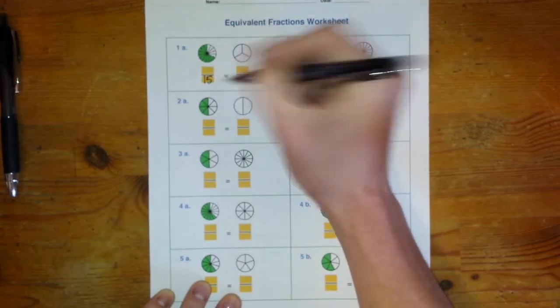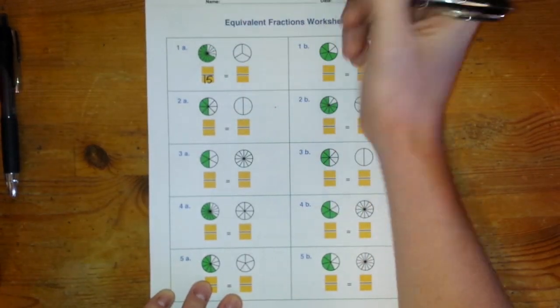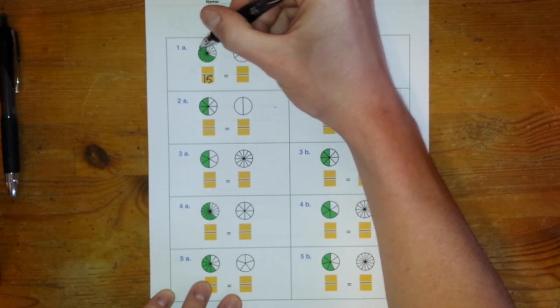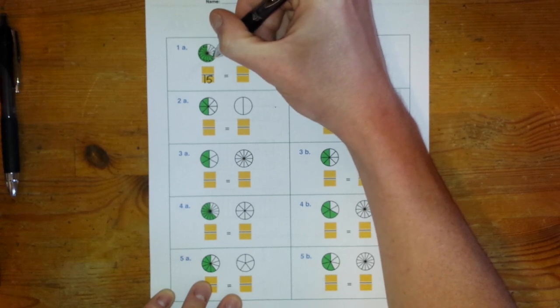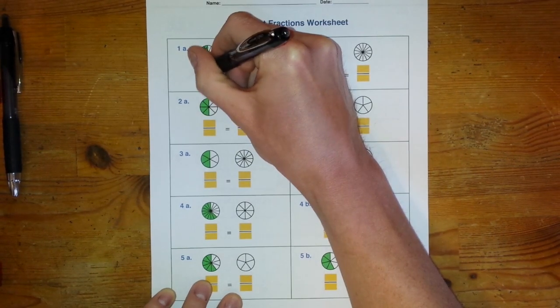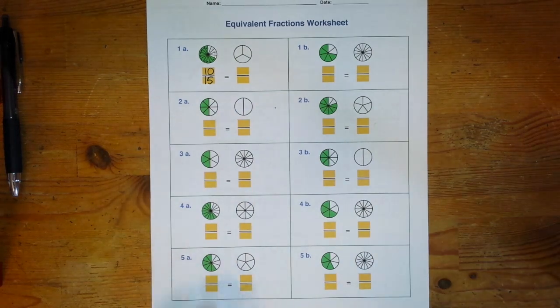Now we have to figure out what the numerator is by figuring out how many are shaded in. So let's go the other way. One, two, three, four, five, six, seven, eight, nine, ten. So this fraction is ten fifteenths.